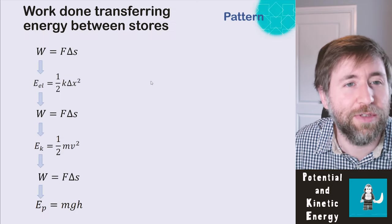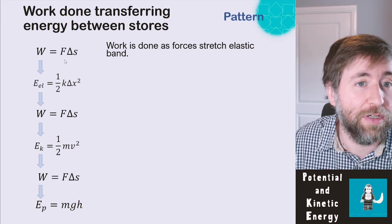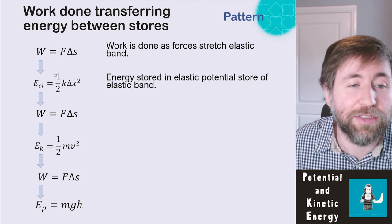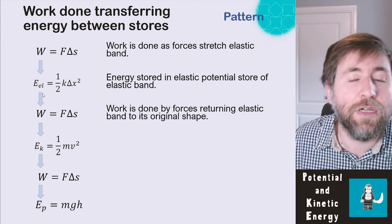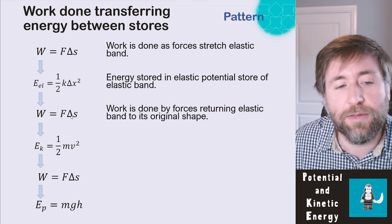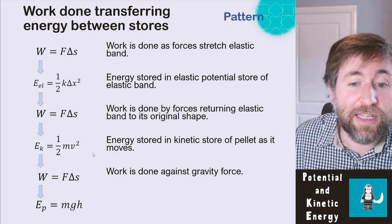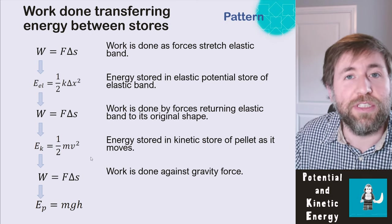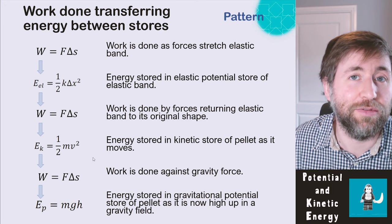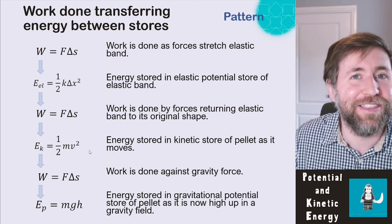In more detail: I do work on the elastic band to stretch it — work done is force times distance. That energy is stored in the elastic potential store. Work is then done by the elastic band returning to its original shape, and the energy is now stored in the kinetic store of the pellet or band. That energy is then transferred against gravity — doing work against gravity to lift the object — and is stored in the gravitational potential store. This cycle continues: potential to kinetic to potential.